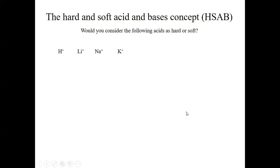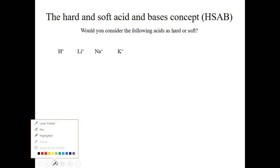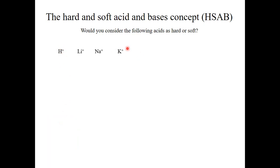Now let us consider Lewis acids. Here we have H+, Li+, Na+, and K+. H+ is physically the hardest and K+ is the softest in this series. Generally, all alkali metal ions are considered to be hard, even if you added Rb+ and Cs+. Even though these species are fairly large, this is because they have no ability to make any pi interactions.